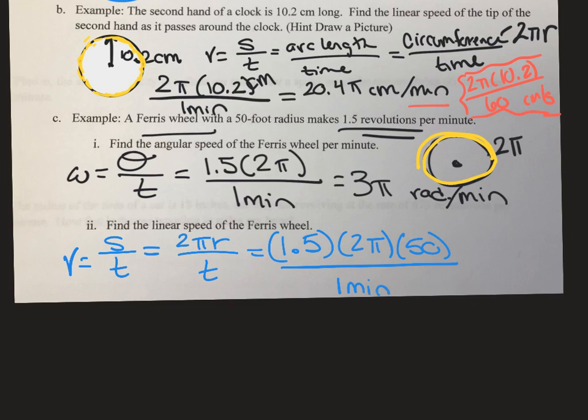So we can multiply this all together. So I have 1.5 times 2, which is 3. 3 times 50 is 150. So I have 150 pi. This is going to be, because this was in feet. My label here is going to be feet per minute.